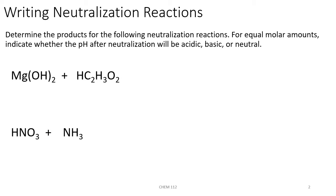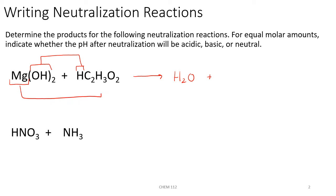Determine the products for the following neutralization reactions, and for equal molar amounts, indicate whether the pH after neutralization will be acidic, basic, or neutral. In our first example, we have magnesium hydroxide plus acetic acid. Doing double replacement, the hydroxide ion pairs with the hydrogen ion to give us water, and the magnesium ion pairs with the acetate anion. Magnesium is always Mg²⁺ and acetate is C₂H₃O₂⁻, so we end up with Mg(C₂H₃O₂)₂ as our neutral formula.